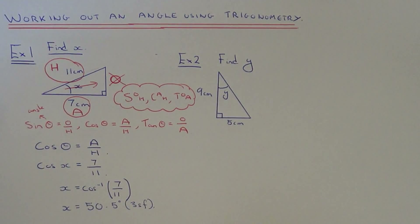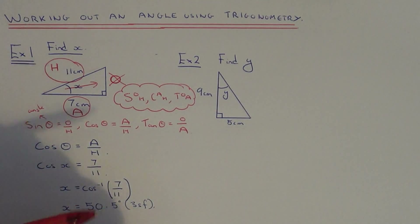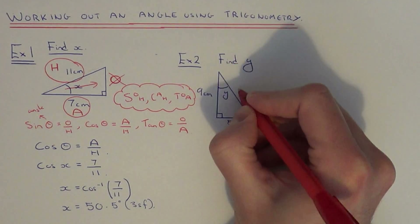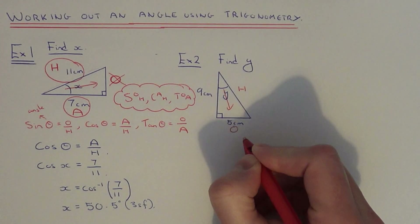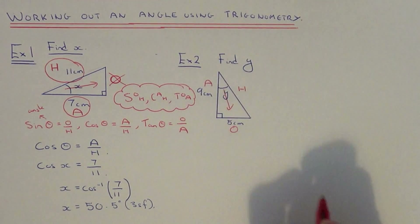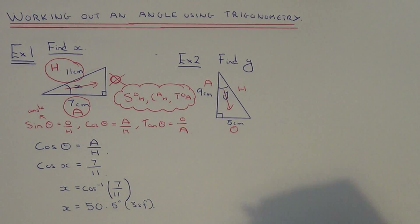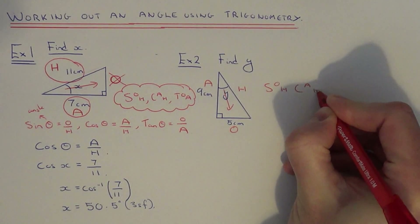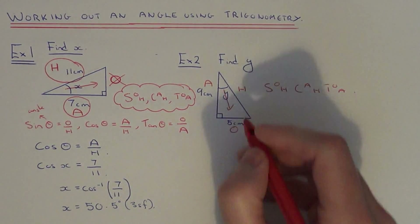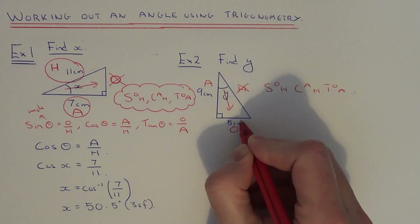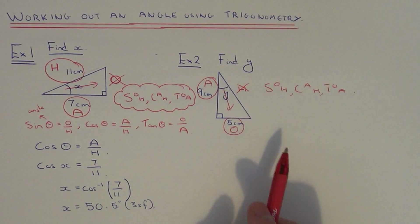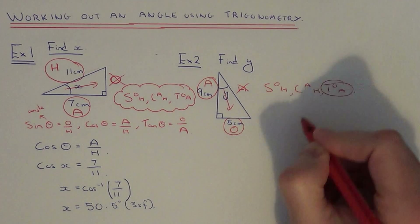Let's move on to example 2. This time we've got a right angle triangle, two sides given, and we're after the angle, so again we know it's a trigonometry question. Labelling up the triangle: the longest side is the hypotenuse, the side opposite the angle is the opposite side, and the third side is the adjacent. Writing down SOHCAHTOA — it's nothing to do with the hypotenuse; I've got the opposite side and the adjacent side, so which trig formula involves opposite and adjacent? It's the tan formula.